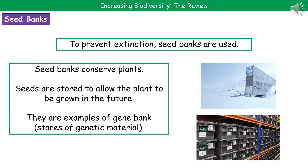When thinking about plants, we can also help prevent their extinction through the use of a seed bank. The idea of the seed bank is to conserve plants by taking seeds from a variety of species and storing them so that if a plant dies out in the wild, we have a bank of seeds to grow them once more. These are examples of a gene bank — a store of genetic material. There is a large seed bank in the Arctic Circle where seeds from plants all over the world are stored deep underground in sub-zero conditions.